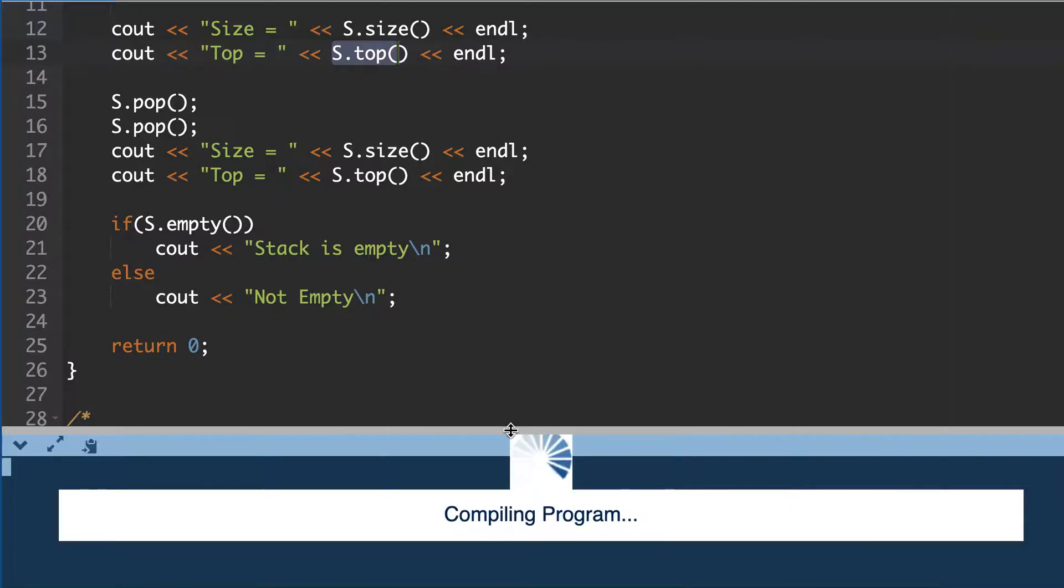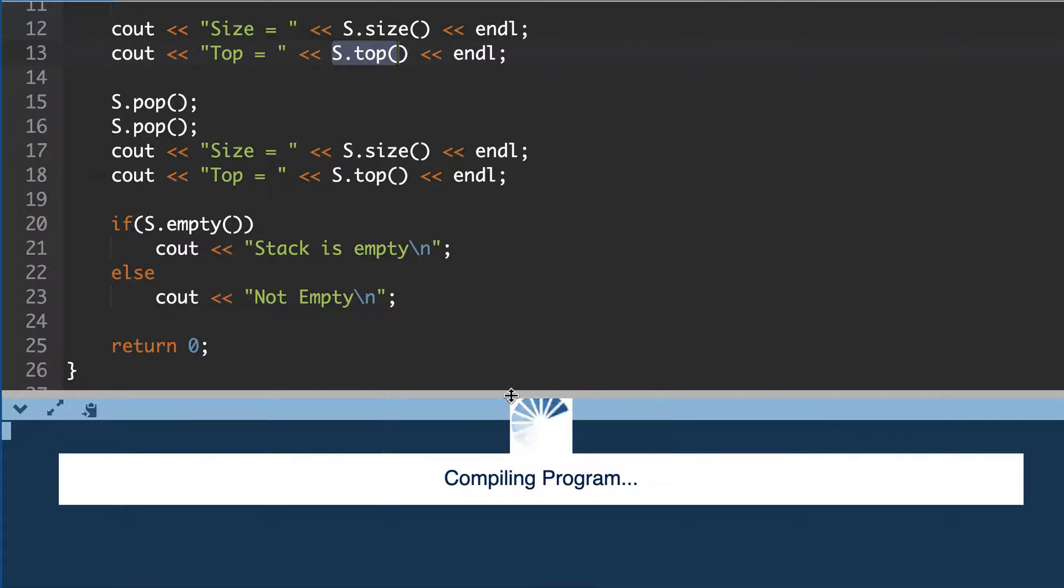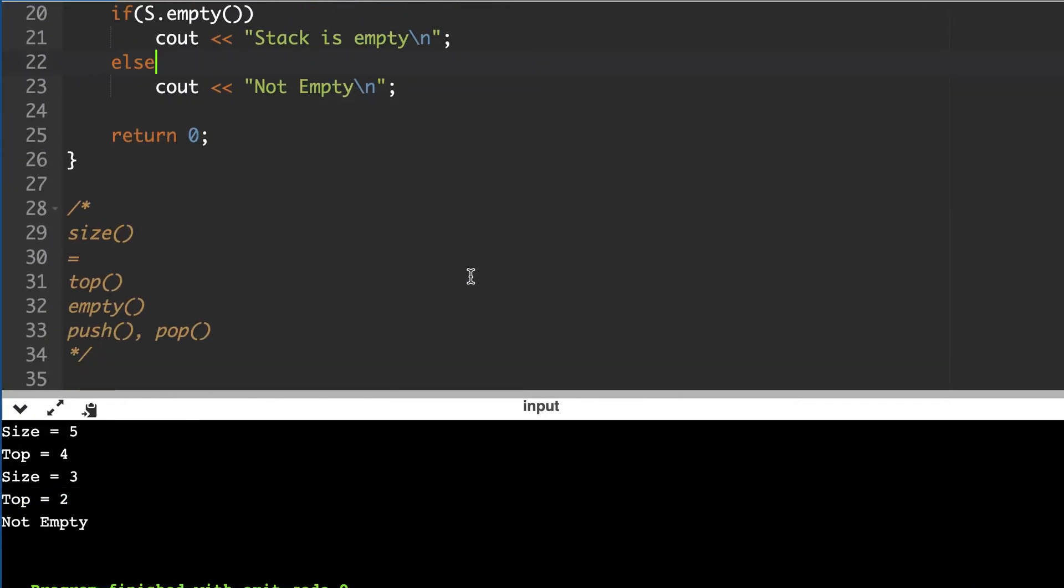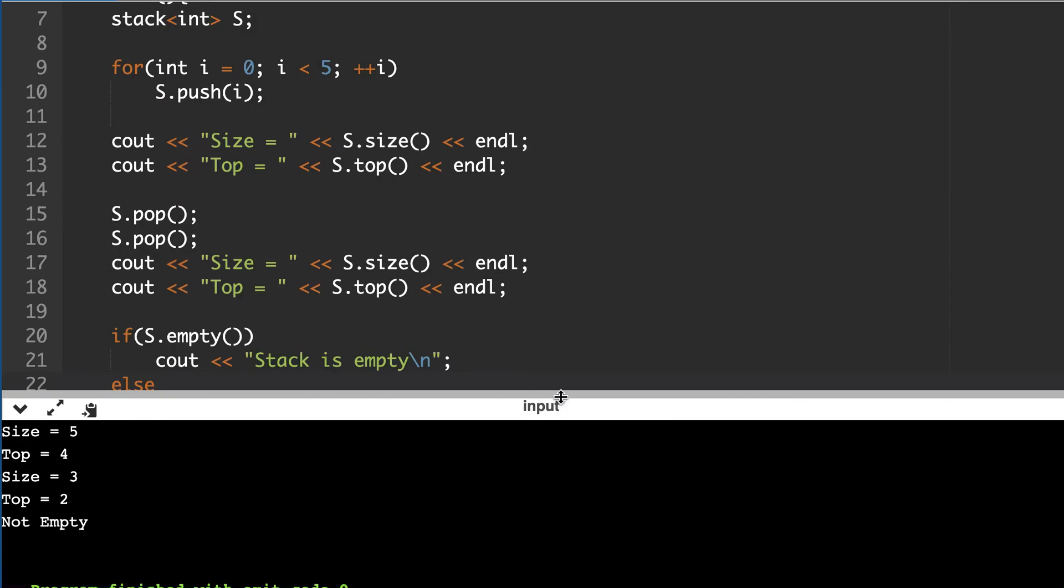Let's run it. Size is five, top is four, then we pop two elements so four and three are popped. Two is now at the top and it's not empty. So I hope it was clear. You can play with it.